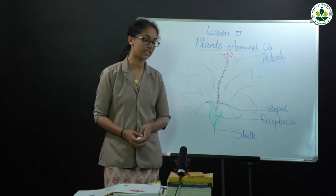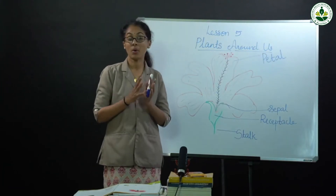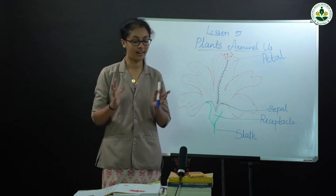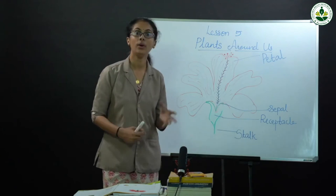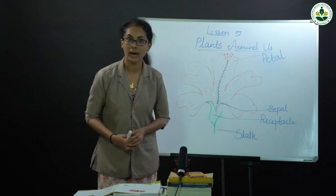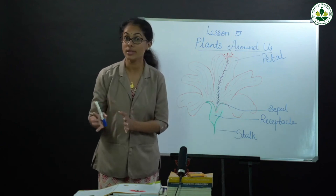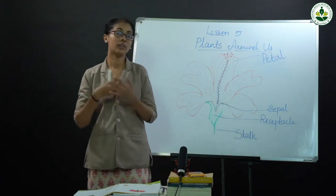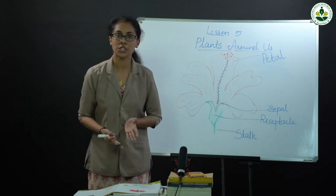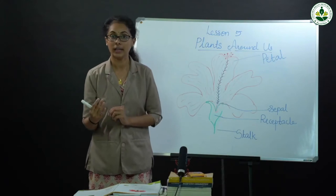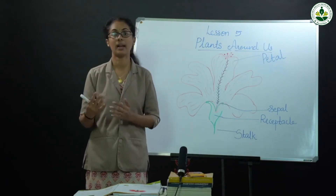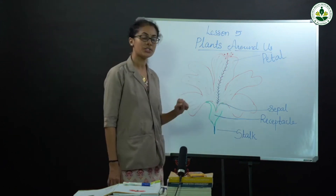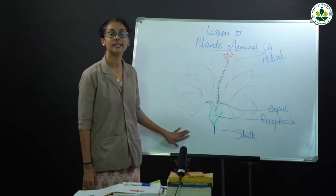Next one is flowers. Flowers are the most colorful part of a plant. Flowers of different plants have different shapes, different odors — meaning different smells — different sizes, and different parts.